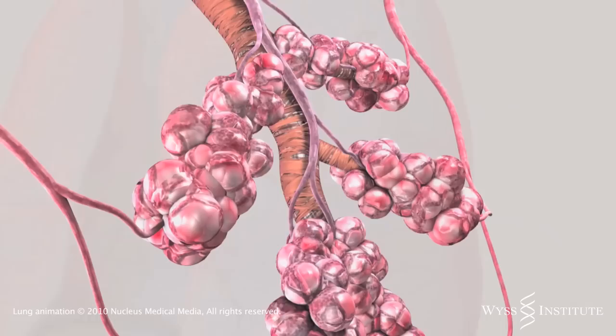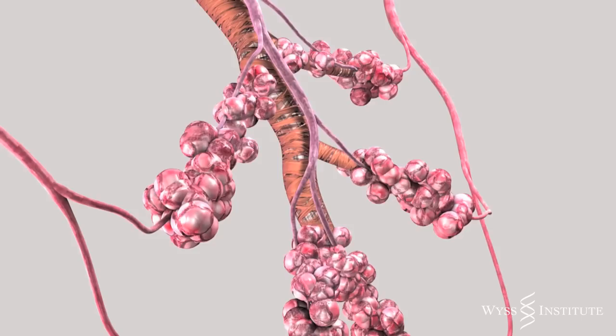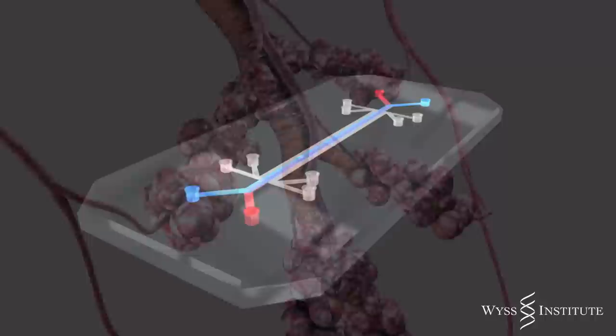With every breath, air enters the lungs, filling and expanding microscopic air sacs. Oxygen is transferred across lung and capillary cells and into the bloodstream. This is also where aerosol drugs are absorbed and where infections and tumors form in the lung.